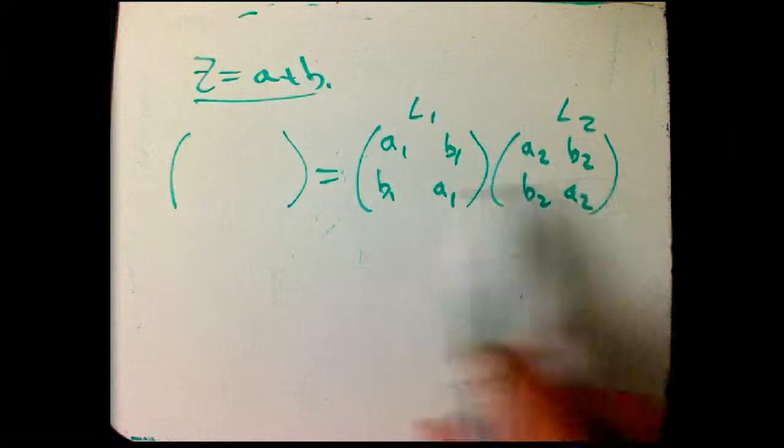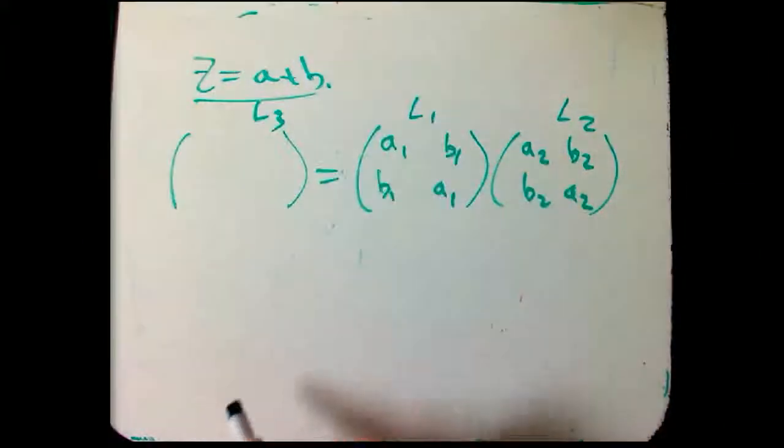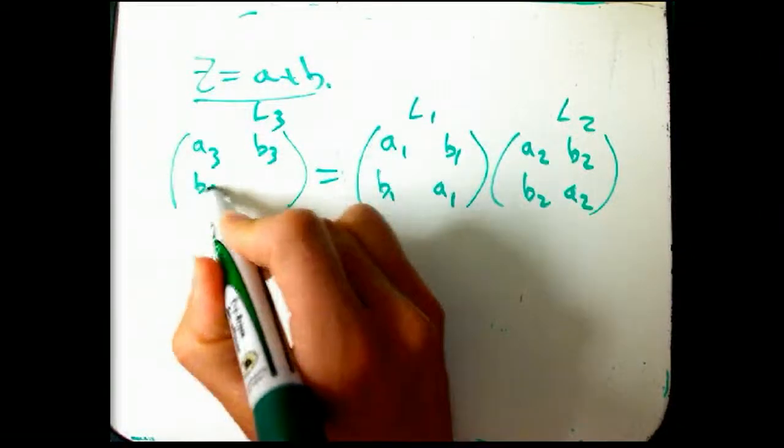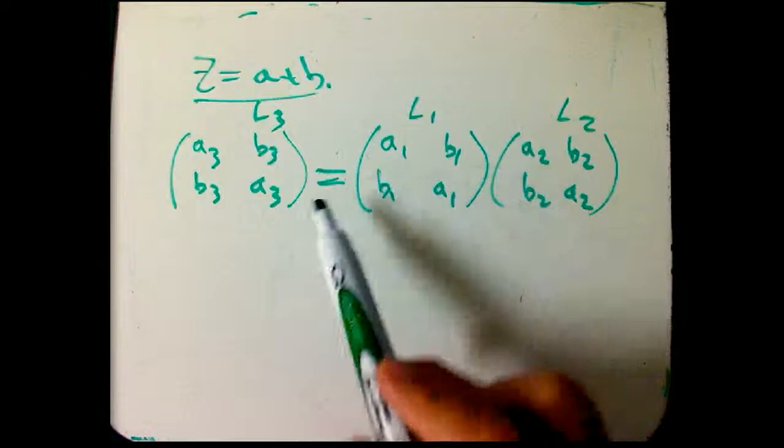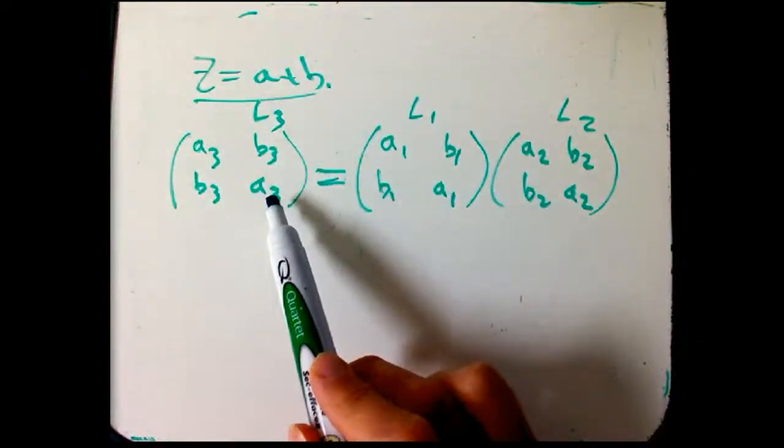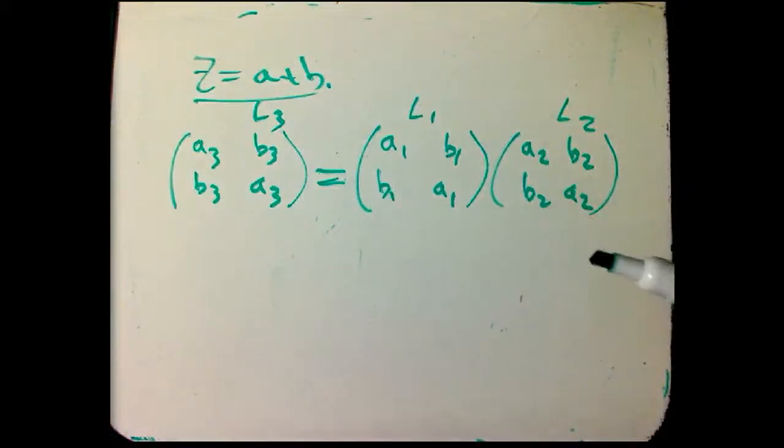And I'm going to multiply those two Lorentz transformations. I know that ends up with some other Lorentz transformation, a3, b3, b3, a3. And the problem was when I expressed everything in terms of v's, the formula for the v that corresponded to L3 was ugly. And in particular, it wasn't just addition.